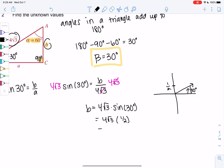So 4 root 3 times sine of 30 would be 1 half. Sine of 30 is 1 half. And then when we multiply, 4 and 2 cancel out. So we get 2 root 3 for B.